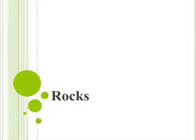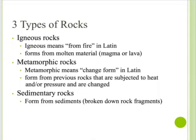In this lecture, we will be talking about metamorphic rocks. Let's do a quick recap. The three types of rocks are igneous, metamorphic, and sedimentary. Igneous rocks come from magma or lava. Metamorphic rocks come from rocks that have been changed due to heat and or pressure. Meta and morph are two words that mean change and form. Sedimentary rocks form from sediments.